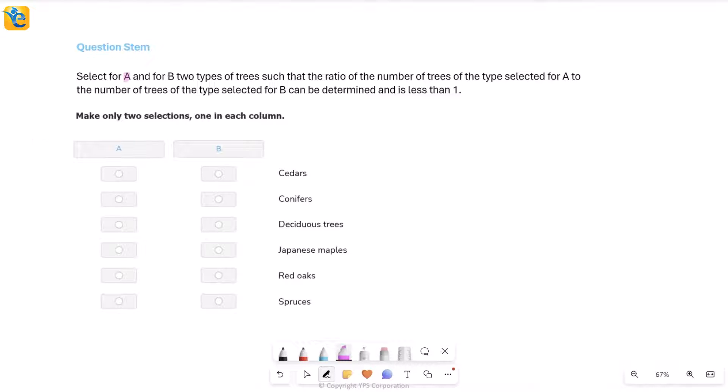So we need to select for A and B, which are here, your column headers. You need to select two types of trees such that ratio of number of trees of type A to number of trees of type B. Just see how much more complicated their language is. But actually, what it's simply saying is number of trees in the first type, we'll just call it number A over number B. This ratio can be determined. First of all, it should not be something whose value you cannot be sure of. That means I'm talking about actual value, not just a range.